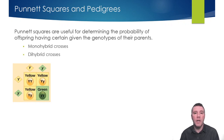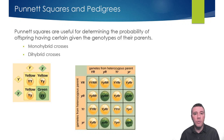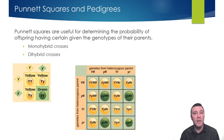Dihybrid crosses allow us to model the inheritance pattern of two genes. This Punnett Square shows the resulting probabilities given two parents that are heterozygous for two traits. The variety of possible genotypes results in a characteristic phenotypic ratio: out of 16, nine individuals with the dominant color and dominant shape, three with the dominant color but the recessive shape, three with the recessive color and the dominant shape, and one with both recessive traits — a nine to three to three to one phenotypic ratio.